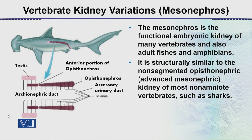Looking at this diagram, the testis has already become separate. There is the archinephric duct in the middle, within which there is the mesonephros — that is the anterior portion of the opistonephros. The ducts of the mesonephros open into a common duct, and ultimately they come out through the excretory urinary duct. The anterior portion, which corresponds to the pronephros, is being absorbed, while the mesonephros behind it has become considerably functional.